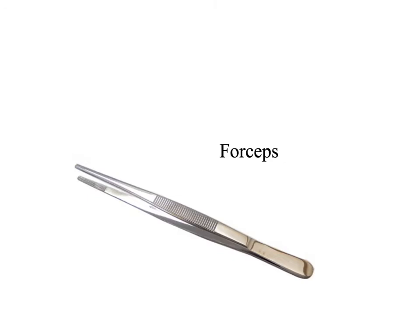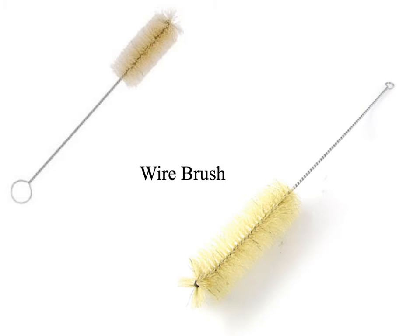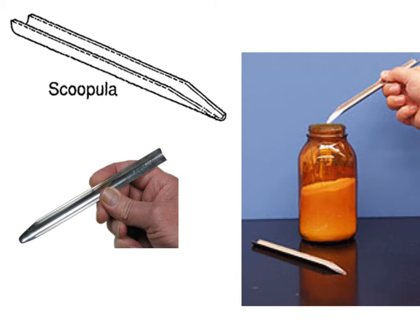These are called forceps — in the regular world we'd call them tweezers, but in science we call them forceps. That's what they'll be called in your labs and on your quiz. These are called wire brushes, and they are used to clean glassware — like a test tube or an Erlenmeyer flask that's too small to get a sponge into. So their function is cleaning glassware.